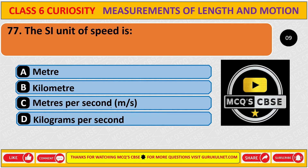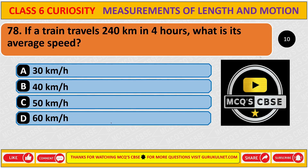The SI unit of speed is — and the correct answer is C, meter per second.